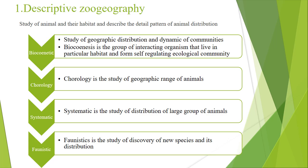The next branch is systematics. Systematics is the study of distribution of large groups of animals. Just as in zoology you study systematics and taxonomy covering many phyla and kingdoms, in systematic zoogeography you similarly study the distribution of large groups of animals.